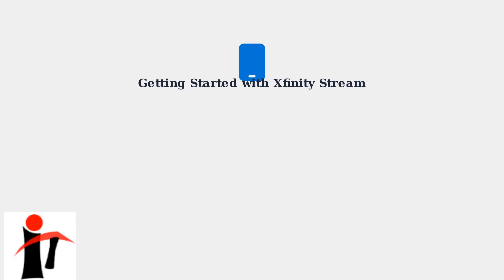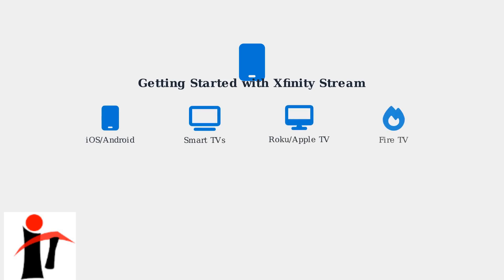Setting up Xfinity Stream is straightforward and can be done on multiple devices. The first step is downloading the Xfinity Stream app from your device's app store. The app is available on iOS, Android, Roku, Samsung Smart TVs, LG Smart TVs, Apple TV, and Amazon Fire TV. You can download it from the respective app stores on each platform.